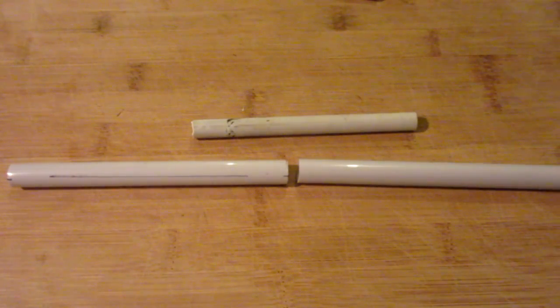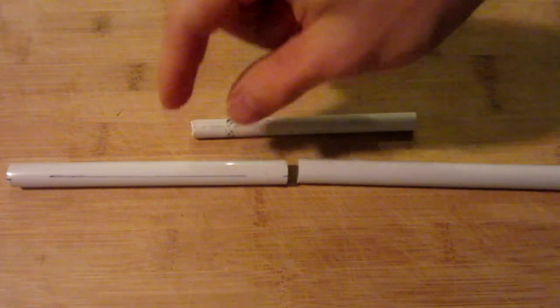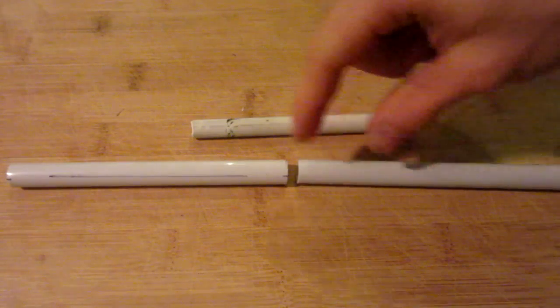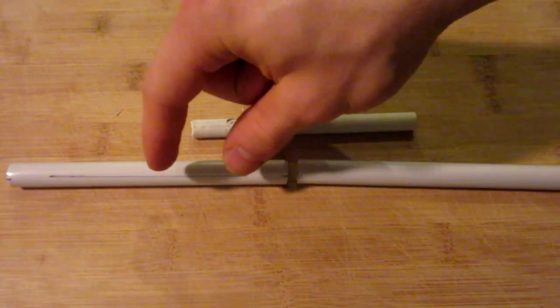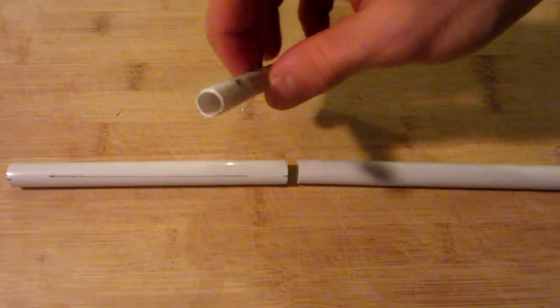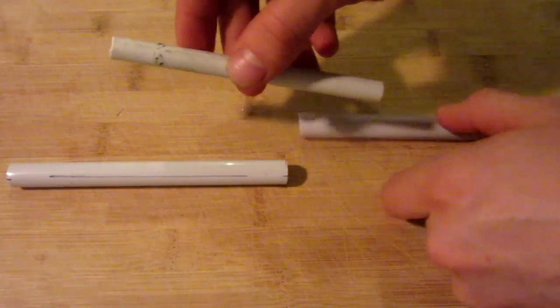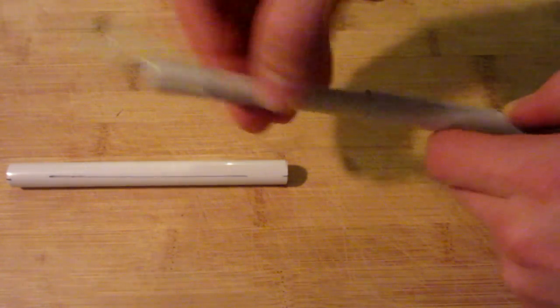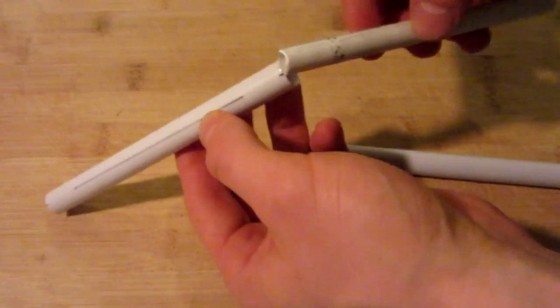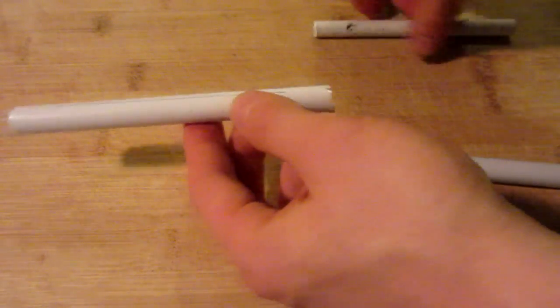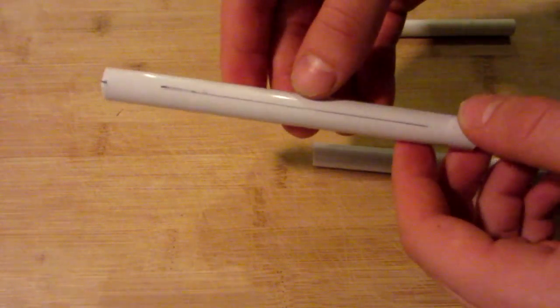So how the bolt action rifle is going to work is basically we're going to make a barrel out of one large tube and the back half of the gun out of the other tube. The smaller tube is going to be your bolt, and you must ensure that it slides freely in and out of both ends of the tube for no friction.